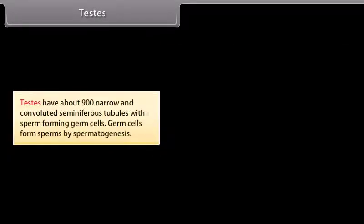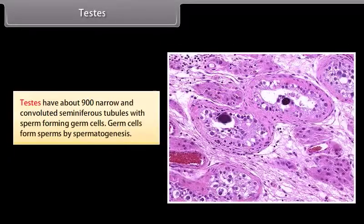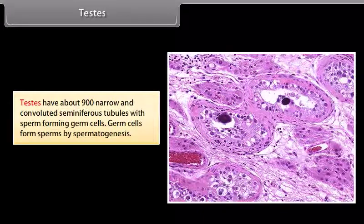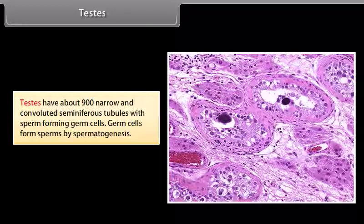Testes have about 900 narrow and convoluted seminiferous tubules with sperm-forming germ cells. Germ cells form sperms by the process of spermatogenesis.